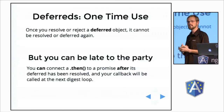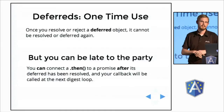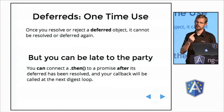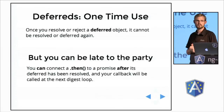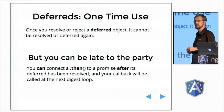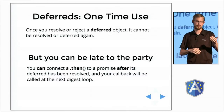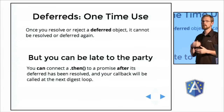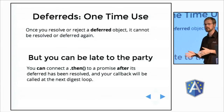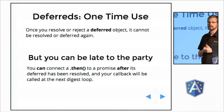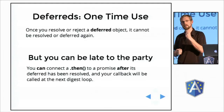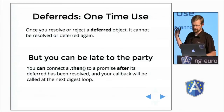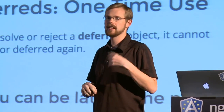Deferreds are one-time-use objects, by design. I believe the promise concept was heavily influenced by functional programming — that's why promises return new objects every time you connect a then function, and why deferreds are meant for one-time use. However, if your promise is late to the party, it will still be notified. If you get a promise object connected to a deferred that was already resolved in the past, your promise will immediately be resolved. This is handy because your code doesn't have to be aware of timing — you just connect your then function and maybe get a callback immediately. In the queue service, this happens at the next digest loop.